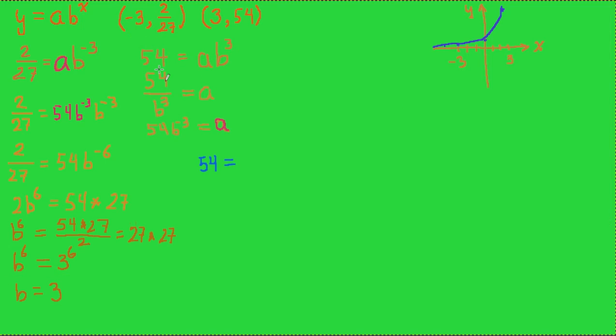That means that 54 will need to be equal to a times b, which happened to be 3, raised to the third power. There's an awful lot of 3's in this problem. Don't get mixed up about which ones are which. We've got this b value, which is 3. We're plugging that b value into this equation to get this equation.